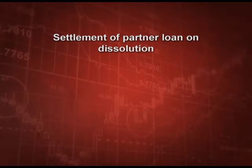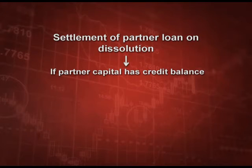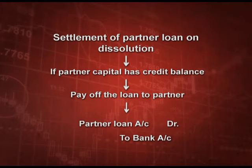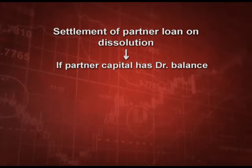Another important adjustment which many times comes in the exam is how do we settle the partner loan on dissolution — that is, partner capital is also there and the partner has given a loan to the firm also. First case: if the partner capital has a credit balance and the loan is also on the liability side — that is, a credit balance — we will pay the loan back to the partner. The entry will be partner loan account debit to bank. A situation can be if the partner capital has a debit balance — in this there are two cases: debit balance is more than the loan, or debit balance is less than the loan.